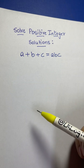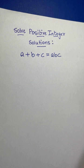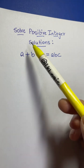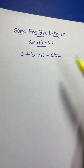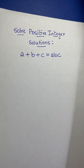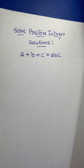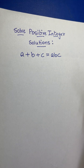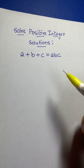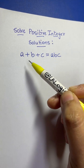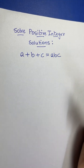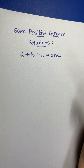Hi everyone. In this video we are going to solve for positive integer solutions for the equation a plus b plus c equals abc. The left-hand side and right-hand side are both in cyclic symmetry.